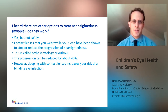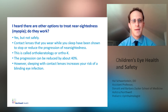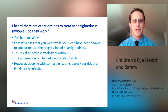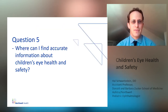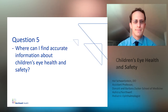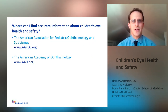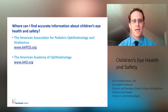Here's an option that works but not safely. You can wear contact lenses when you sleep, and they've been shown to reduce the progression of nearsightedness. This is called orthokeratology, or ortho-K for short — progression can be reduced by about 40%. However, sleeping with contact lenses increases your risk of a blinding eye infection. There are more than 100 documented cases in the literature. The American Association for Pediatric Ophthalmology and Strabismus website is www.aapos.org, and the American Academy of Ophthalmology is at www.aao.org.